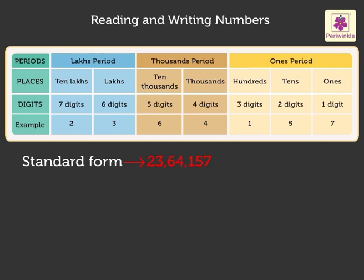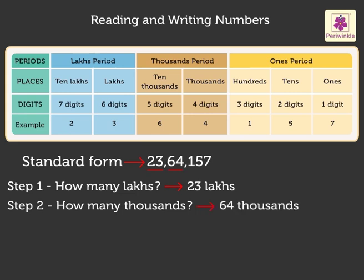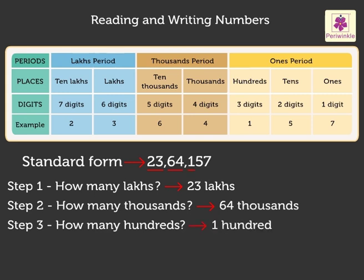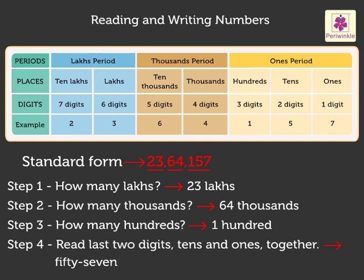We read this number using four steps. Step 1: How many lakh? The number has 23 lakh. Step 2: How many thousands? The number has 64 thousands. Step 3: How many hundreds? The number has 1 hundred. And finally, Step 4: we read the last two digits, tens and ones, together — 57. So, we read this number as 23,64,157.